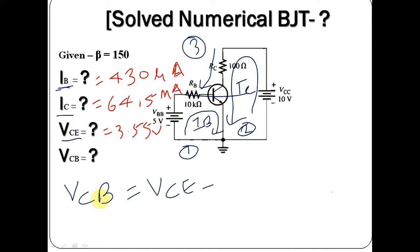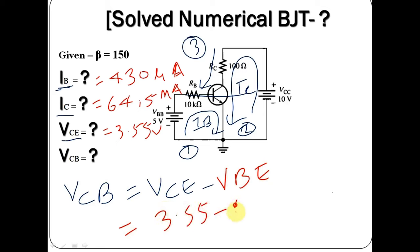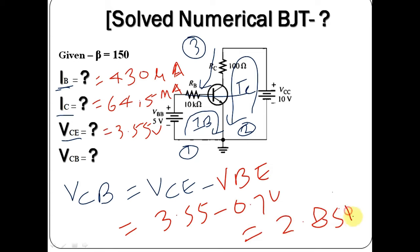Now let us find the value of VCB. VCB equals VCE minus VBE. You know VCE equals 3.55V and VBE equals 0.7V. Solving this, VCB equals 2.85 volts.